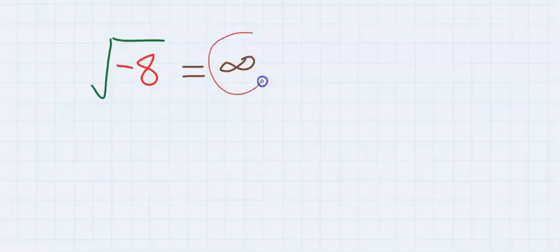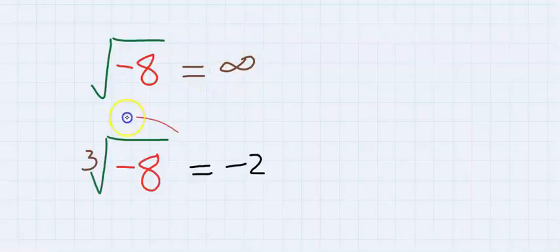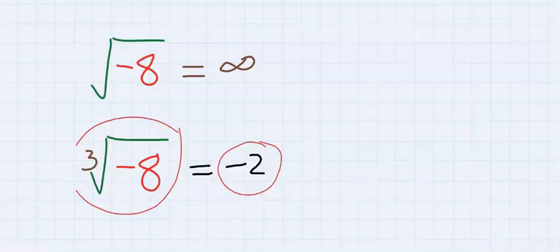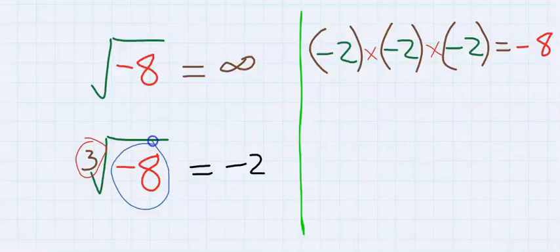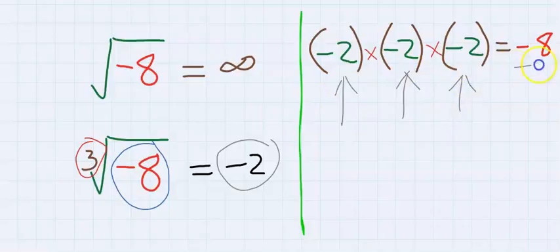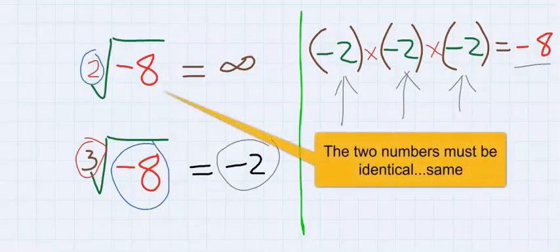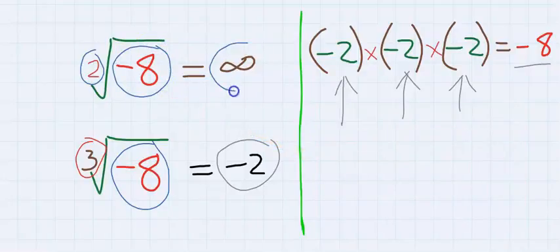...turns to infinity. However, the cube root of minus eight is equal to minus two. The three here means there are three numbers when multiplied give you minus eight, and that number is minus two. If we multiply minus two three times, we get minus eight. However, for square root, two numbers when multiplied to give minus eight—such number does not exist in real numbers.